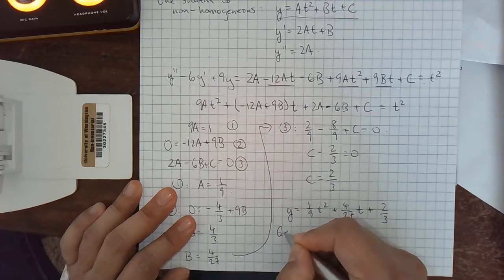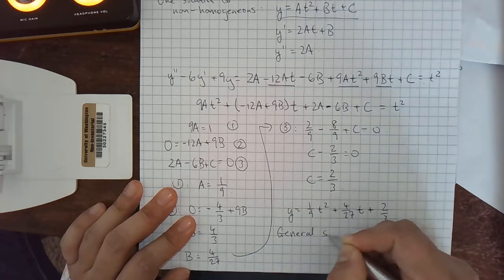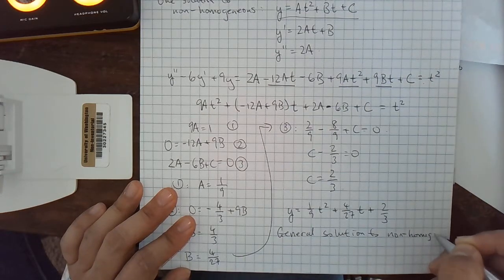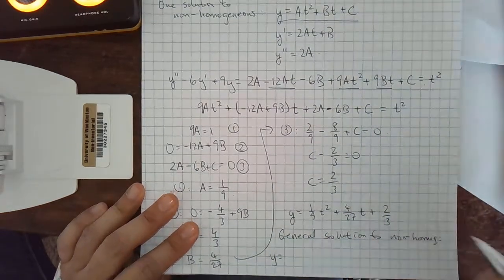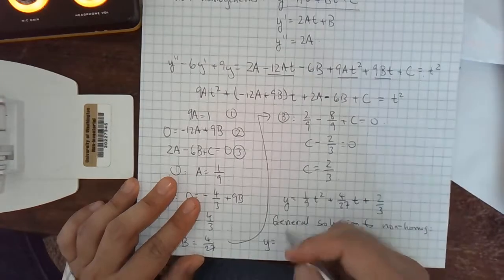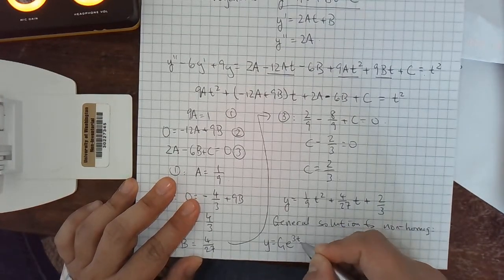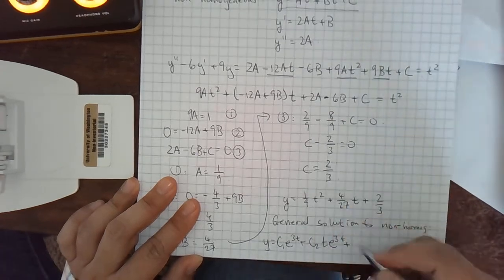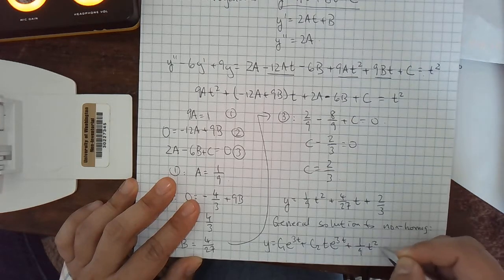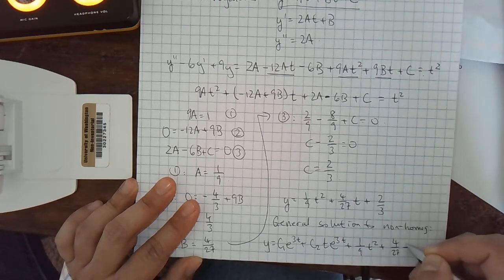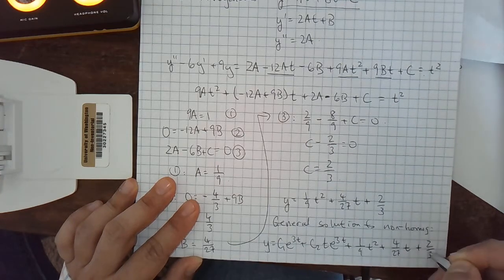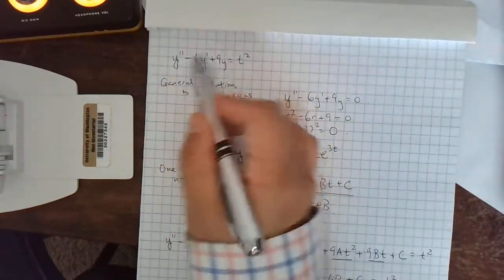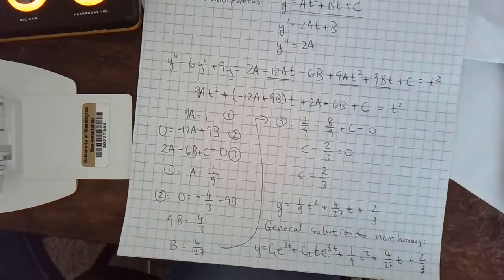So general solution to non-homogeneous I'm going to take what I wrote up here. So this exponential stuff, c1 e to the 3t plus c2 t e to the 3t plus, and then this particular solution, 1 ninth t squared plus 4 27ths t plus 2 thirds. I can put any constants in I want for c1 and c2. This will all solve this differential equation. Could not have guessed that to start out with. So that's the use of this method.